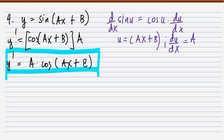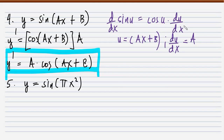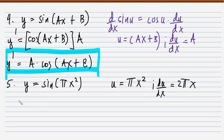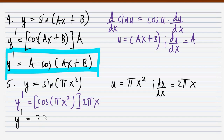Problem number 5: y = sin(πx²). The derivative of sin(u) equals cos(u) times the derivative of u with respect to x. Here u = πx², and its derivative is 2πx. Applying the formula, y' = cos(πx²) multiplied by 2πx. Simplifying, the final answer is y' = 2πx·cos(πx²).